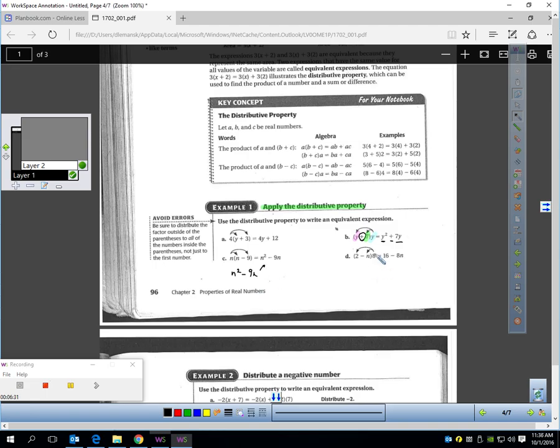Or here, n times n is n squared minus n times 9 is 9n, and there's the statement. Or here, 8 times 2 would give me 16, minus, because there's a minus sign, 8 times n, which is 8n. So, that's 16 minus 8n.